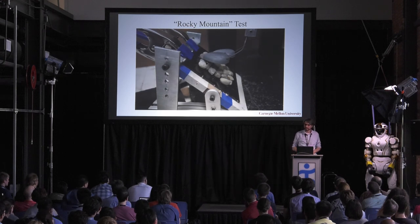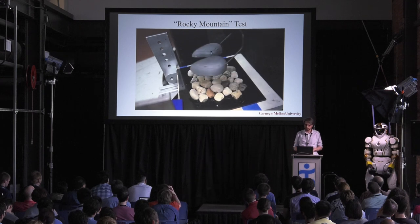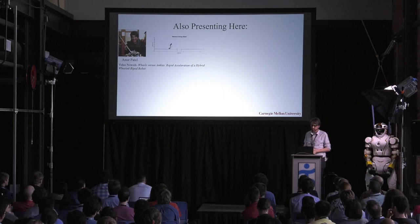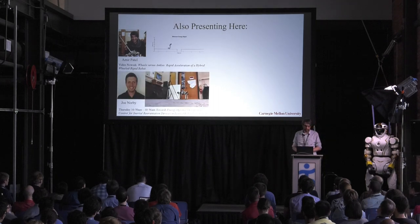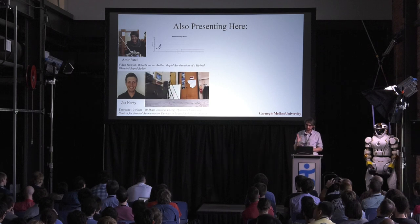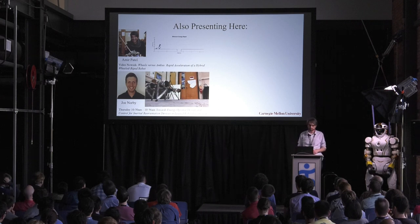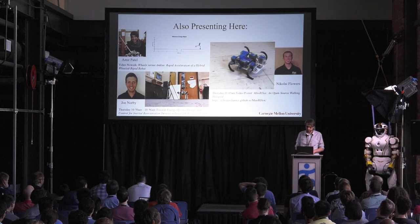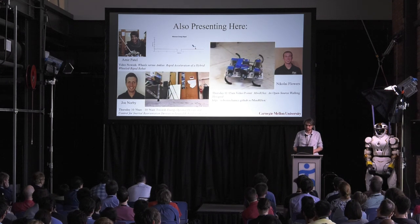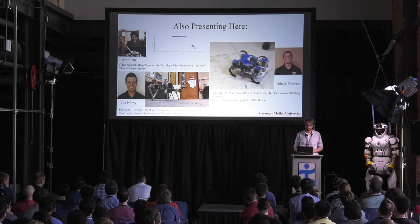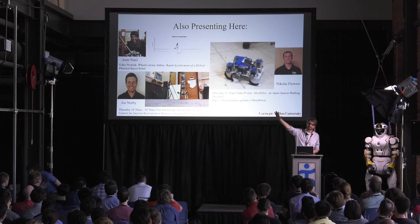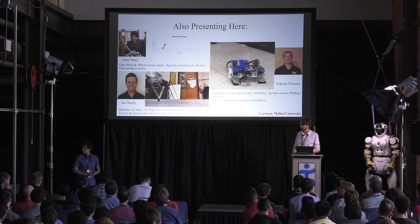I'll have several different rubber samples available all week if you want to come squish them. I also want to advertise other talks from my lab: Amir Patel from South Africa on wheels versus ankles and locomotion optimization; Joe presenting work on optimizing tail behavior — how to use your tail in concert with your legs to run more efficiently and recover robust behavior on rough terrain; and Nikolai, an undergrad, showing a cheap $200 off-the-shelf 3D-printed version of Rex. Their posters are at the top of the stairs on the second floor.